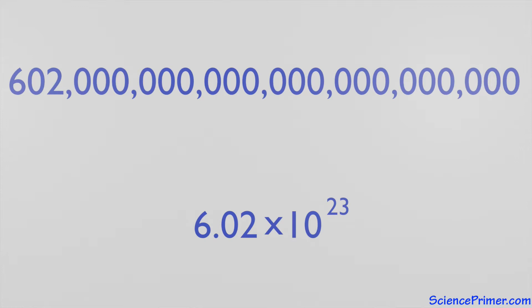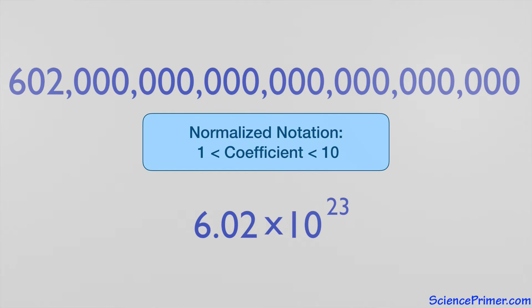The strictest form of scientific notation, sometimes called normalized scientific notation, requires that the value of the coefficient be between 1 and 10. In other words, there can only be one digit to the left of the decimal place.